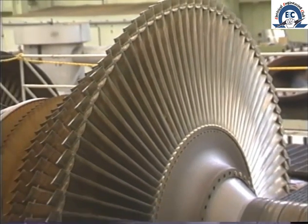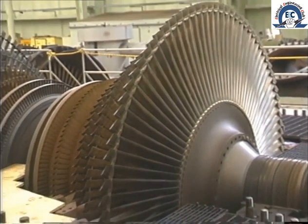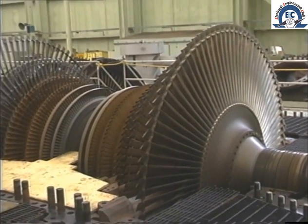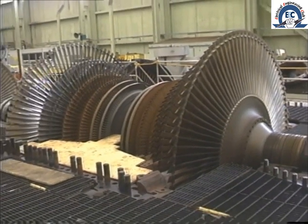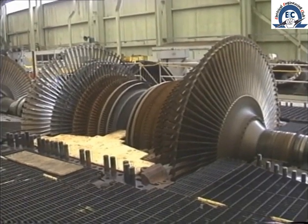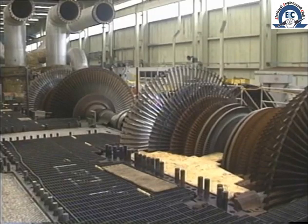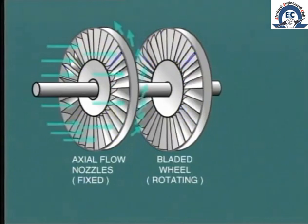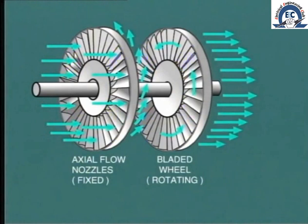The simple answer is that the turbine blades are designed to take advantage of the decrease in steam pressure and consequent increase in steam velocity. The heart of the turbine, the bit that makes it work, is the relationship between the fixed and moving blades. The fixed blades guide the steam onto the moving blades. As the steam passes through the moving blades, it causes the disk to which they are attached to rotate, and consequently the shaft rotates.